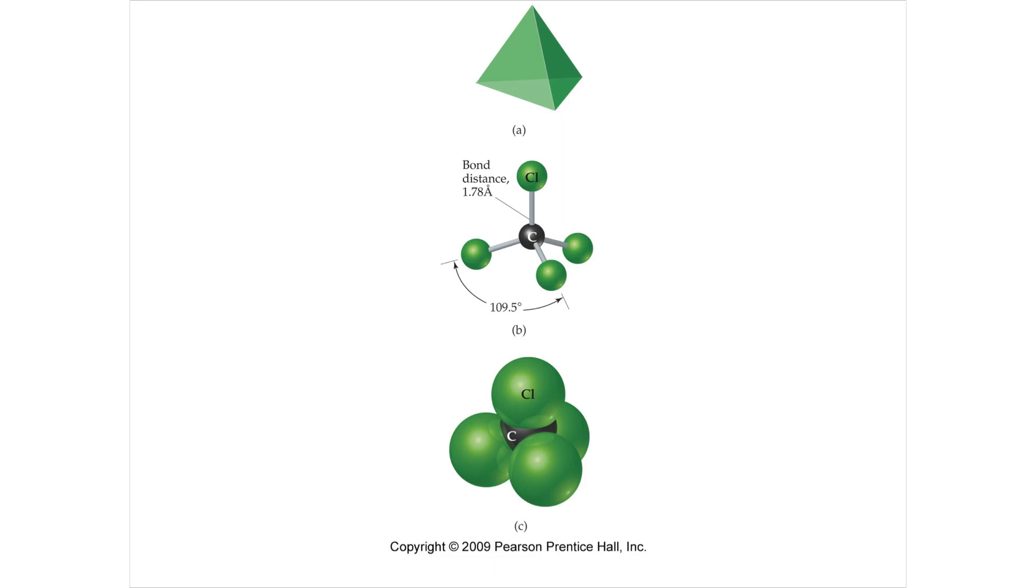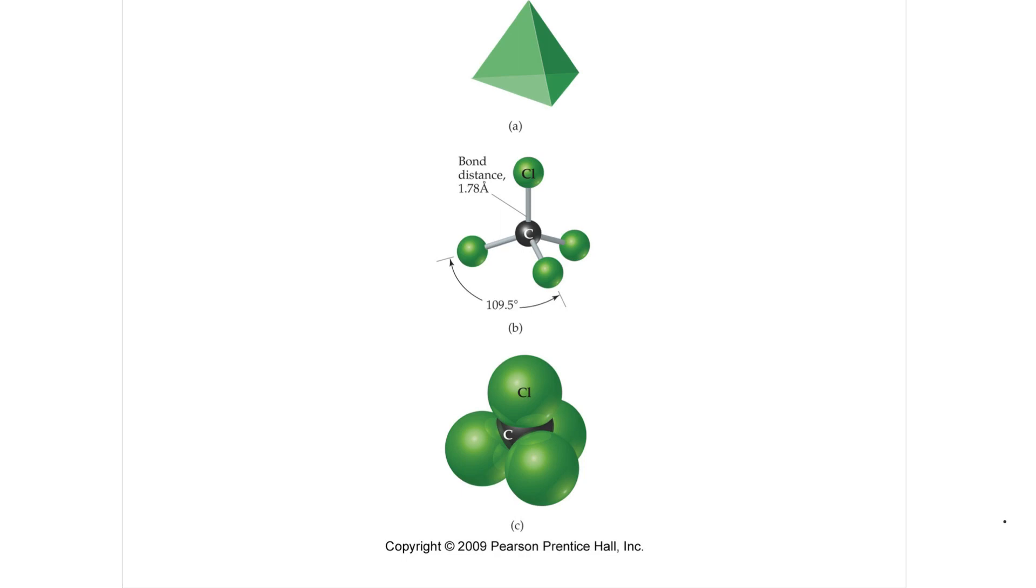Section 9.1 Molecular Shapes. If I give you a Lewis structure of carbon tetrachloride and you have a picture here of carbon tetrachloride, it would look like this.